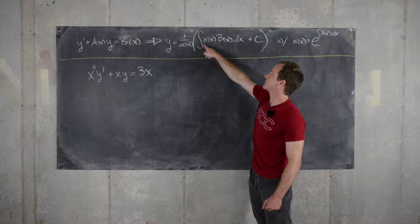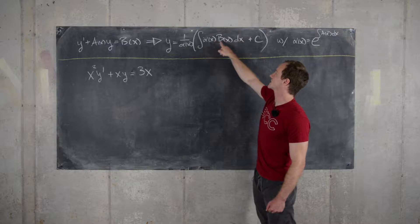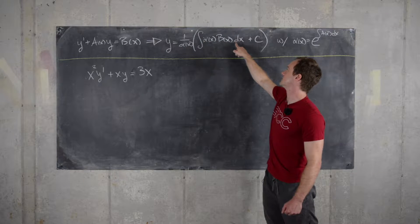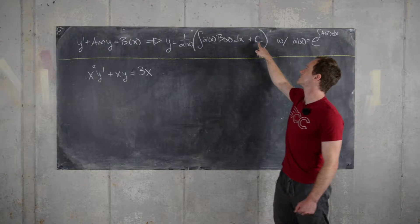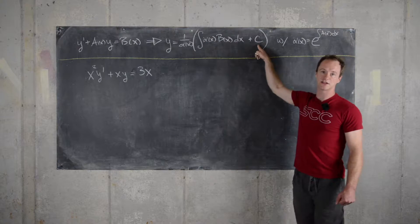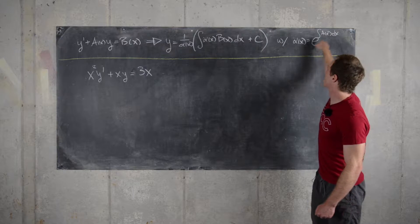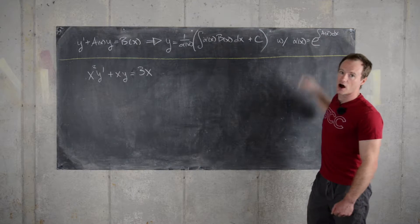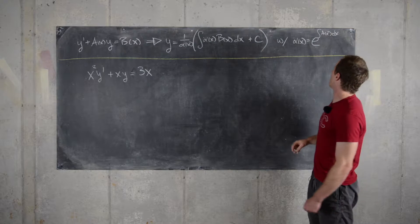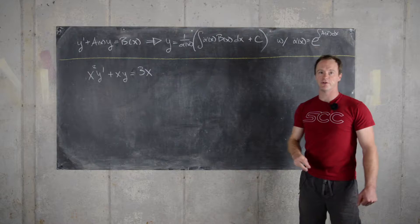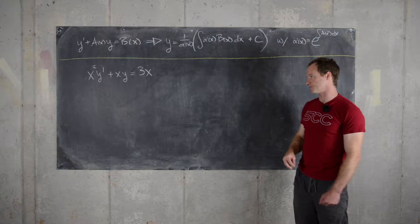the antiderivative of alpha of x times b of x dx, plus a constant of integration, where alpha of x is the exponential of the antiderivative of a of x.